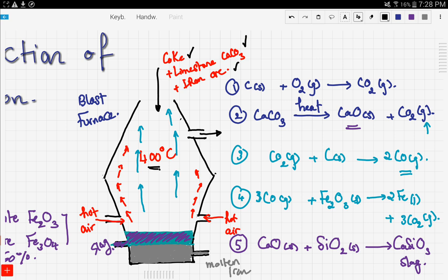What happens is the first reaction that occurs: the coke reacts with oxygen to give carbon dioxide. Then the limestone thermally decomposes to give calcium oxide and carbon dioxide gas. This carbon dioxide gas further goes up in the furnace.